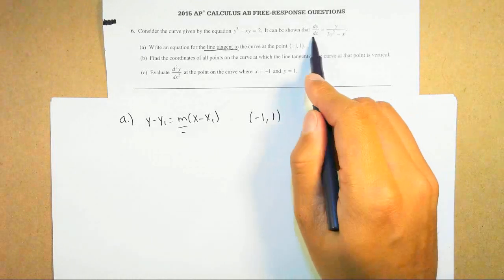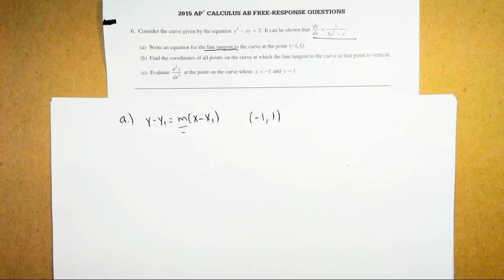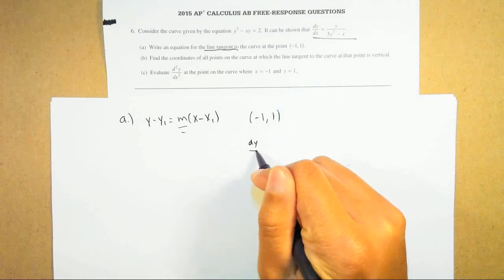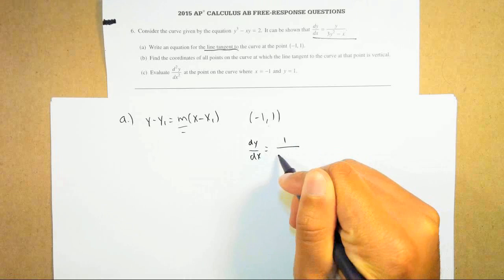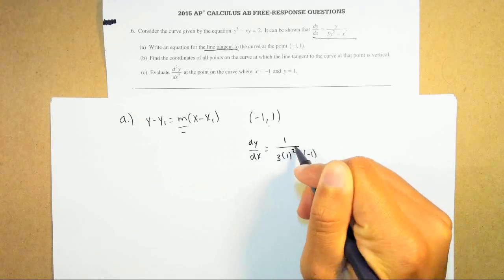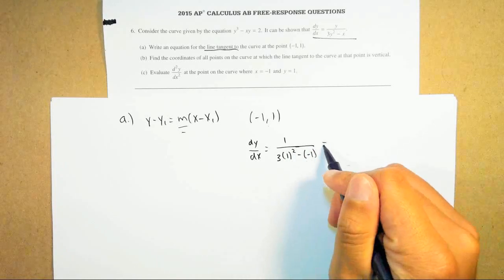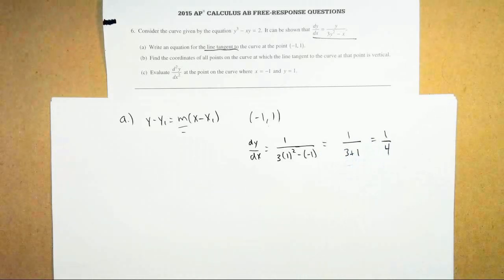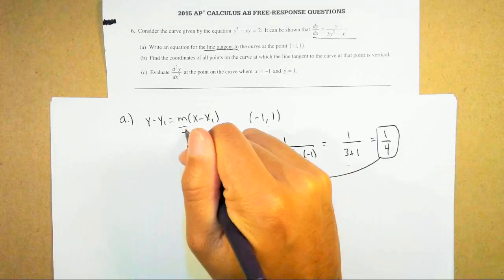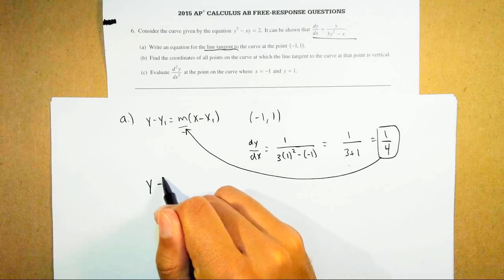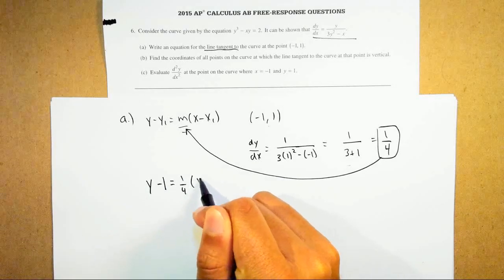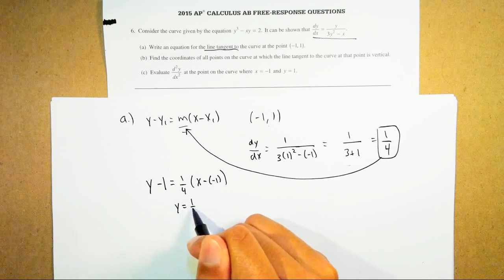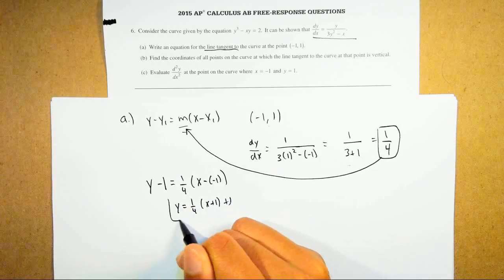Our derivative is dy over dx equals y over (3y squared minus x). There's an x and a y, and those are the two coordinates I'm going to plug in. When we plug in (-1, 1), we get dy over dx equal to 1 over (3 times 1 squared minus minus 1) — don't forget that minus minus 1, that's a mistake a lot of students make. This gives 1 over (3 plus 1), which simplifies to 1 fourth. That is our slope. So our tangent line is y minus 1 equals 1 fourth times (x minus minus 1), which simplifies to y equals 1 fourth x plus 1 plus 1.